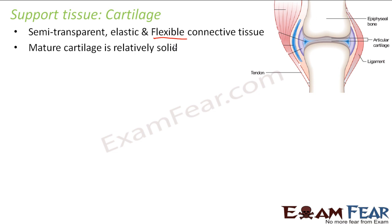There are some vertebrates like sharks where the entire skeleton is mostly made up of cartilage. In humans, cartilage is present only in very few selective areas; otherwise, mostly bones are present throughout the body. But in vertebrates like sharks, the entire skeleton is made up of cartilage. Mature cartilage is comparatively solid.